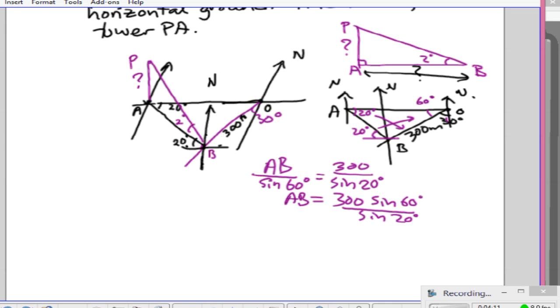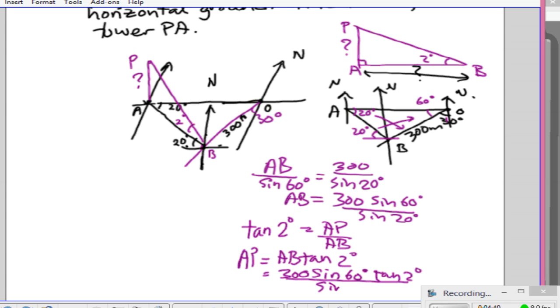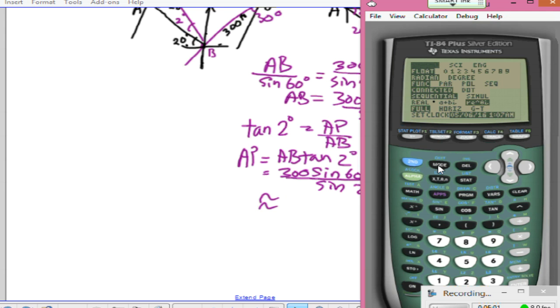What we want is AP. So what we know now is tangent 2 degrees here is equal to AP over AB. Therefore AP itself is going to be AB times tangent 2 degrees. That is 300 times sine 60 degrees times tangent 2 degrees divided by sine 20 degrees. My mode is in the degree, this is in radian, so change the two to degree.